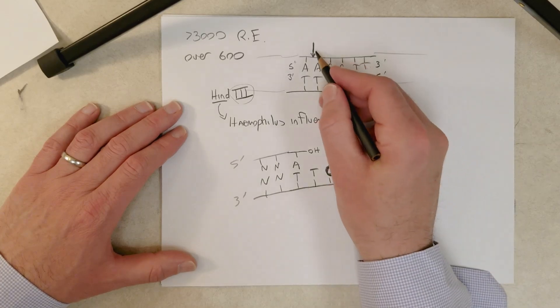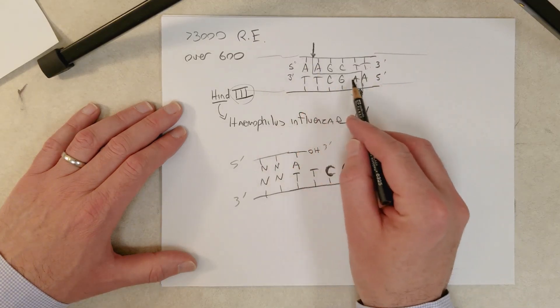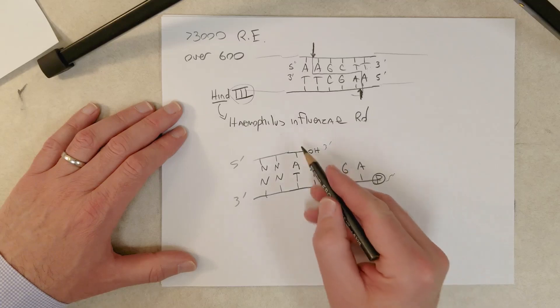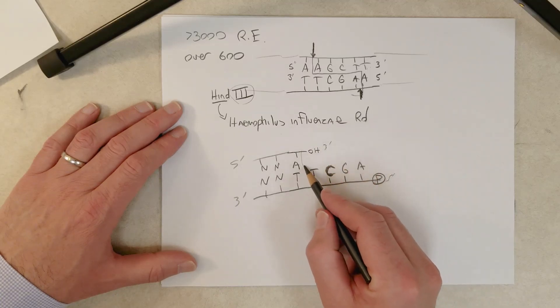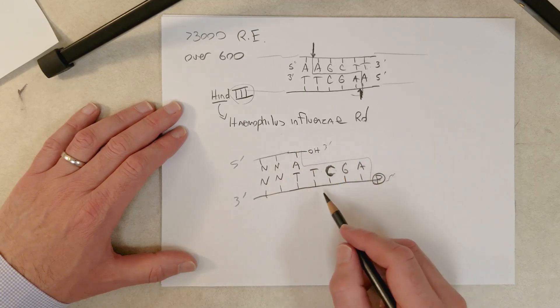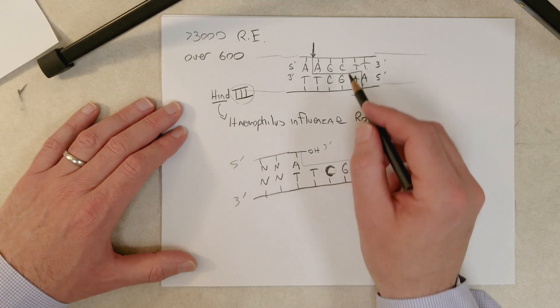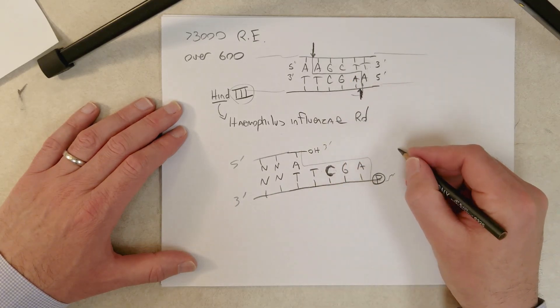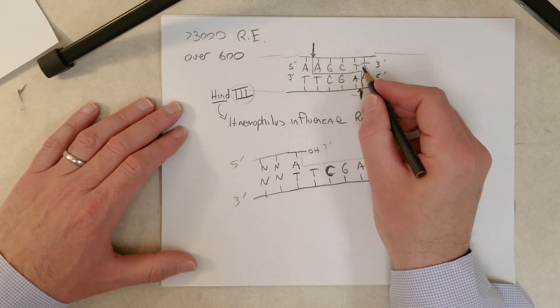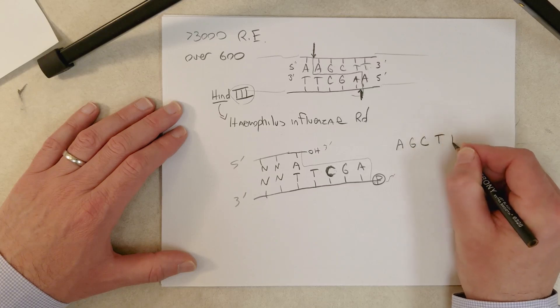So you can see that this end right here is going to be pulled away from this end up here. So it's going to be called a sticky end because of this overhang right here. It's going to tend to stick to another sticky end where the bases are complementary. So let me show you the other sticky end that this could stick to.